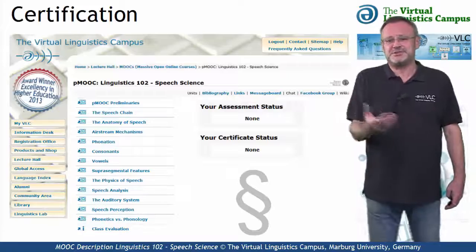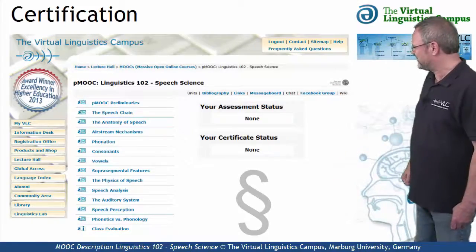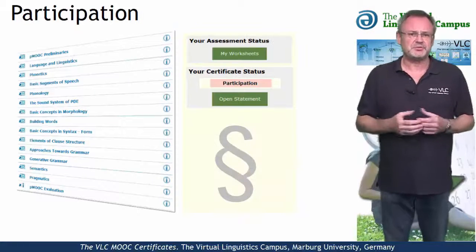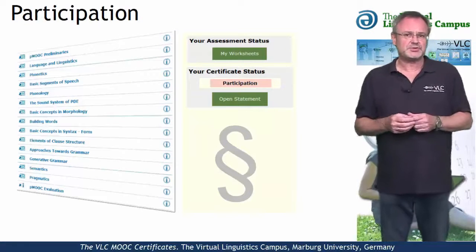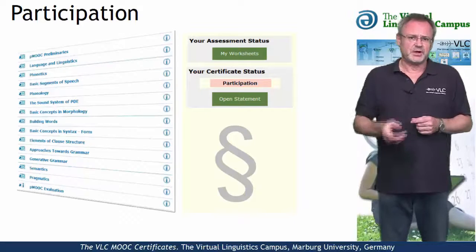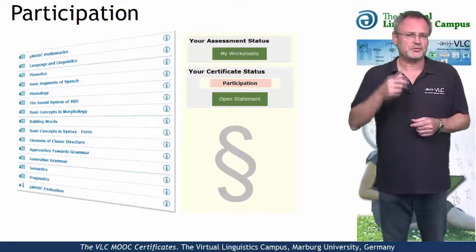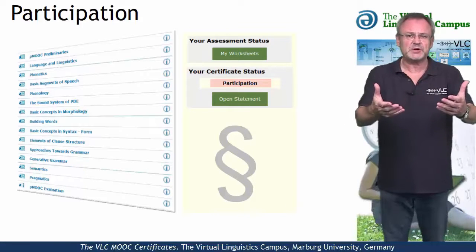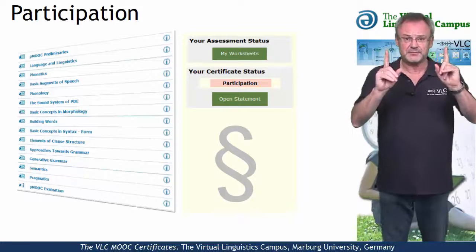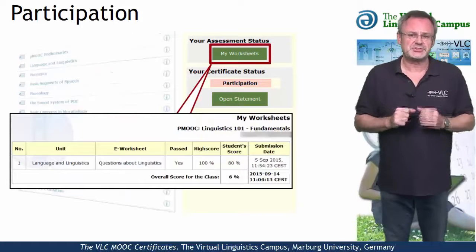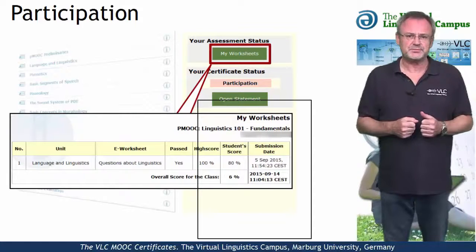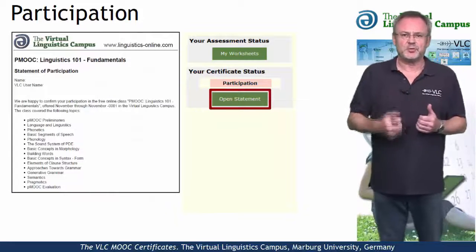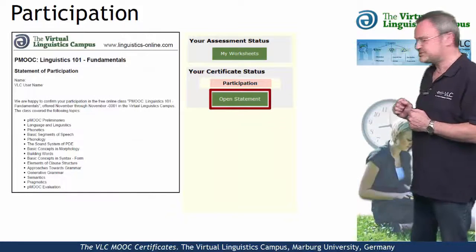And if you want a certificate, here are your options. The simplest option is the Statement of Participation issued by the Virtual Linguistics Campus. You will receive such a certificate for regular and active participation, including the submission of at least one worksheet, and for free. Once you have successfully submitted a worksheet, you will be eligible for such a certificate and can open it by hitting the Open Statement button.